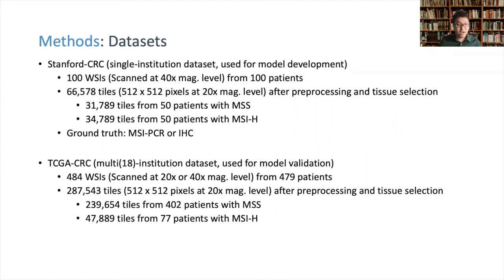All tiles were generated at 20x magnification level, meaning all 40x magnification slides were downsampled to 20x while tiling. The Stanford CRC has an equal class distribution, whereas the TCGA CRC has a skewed class distribution — only 16% were MSI-HI — consistent with the reported prevalence of MSI-HI in the general colorectal cancer population.